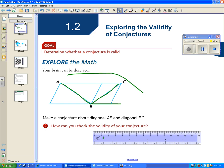I'm looking at this spot right here. The conjecture that you might make is that AB seems to be longer than BC.